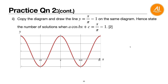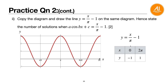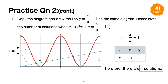To draw the line, make a small table. Choose x = 0 and x = 2π. At x = 0, y = −1. At x = 2π, y = 1. Plot (0, −1) and (2π, 1), connect and label. Looking at the graph, count intersections between the red curve and the blue line: 1, 2, 3, 4 — so there are four solutions.